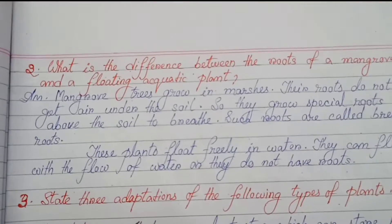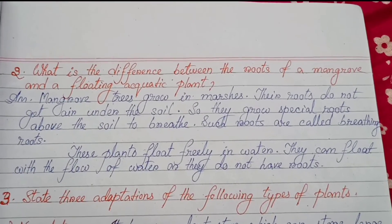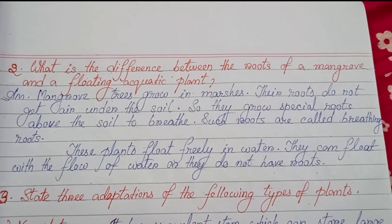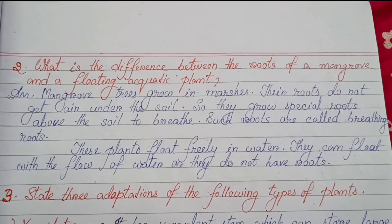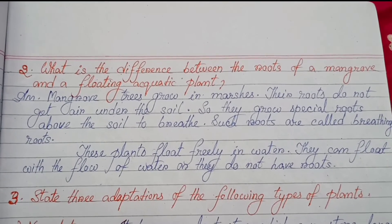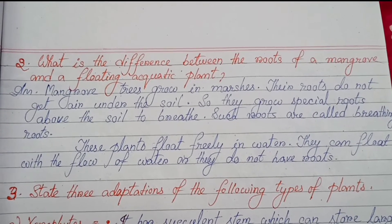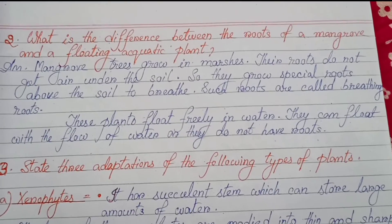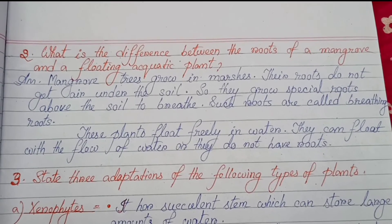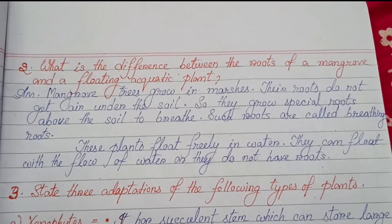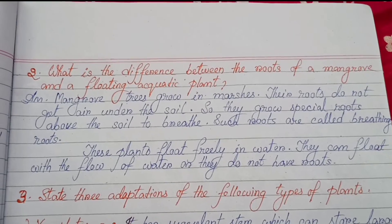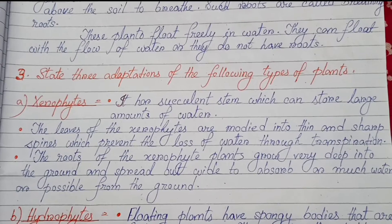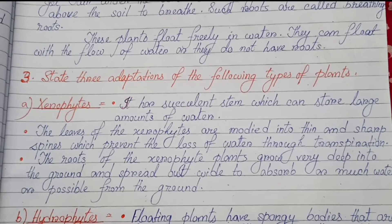Number two: what is the difference between the roots of a mangrove and a floating aquatic plant? Mangrove trees grow in marshes. Their roots do not get air under the soil, so they grow special roots above the soil to breathe — such roots are called breathing roots. Floating aquatic plants float freely in water with the flow of water, as they do not have roots.